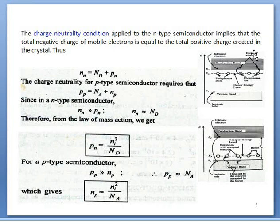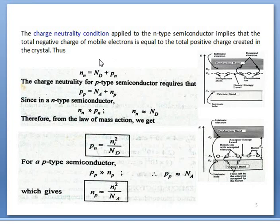In n-type semiconductor, total negative charge is expressed by Nn (electrons in n-type), and total positive charge at the donor level is ND. The total number of holes in n-type is Pn. This positive charge in the donor level represents the number of immobile atomic ions, and holes represent positive charge in the valence band. Multiplying each term by 1.6×10⁻¹⁹ gives the actual charge. Both total charges are equal, confirming charge neutrality.